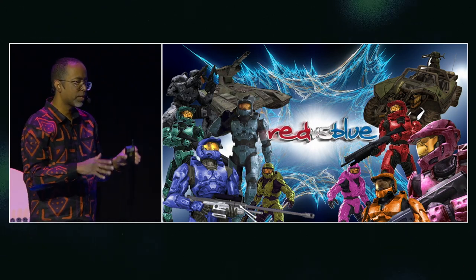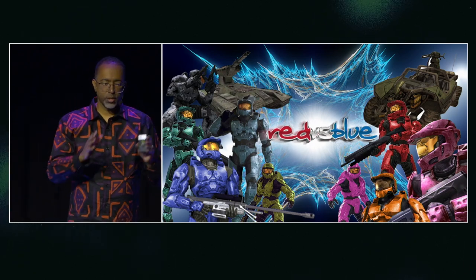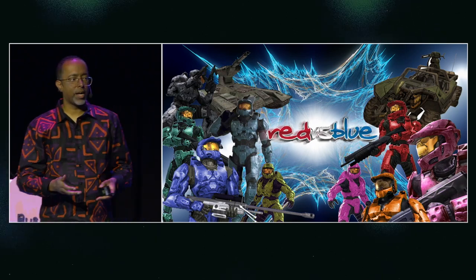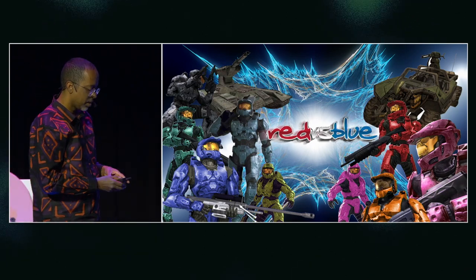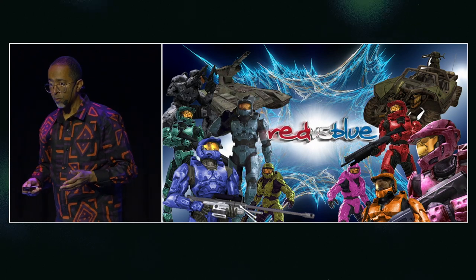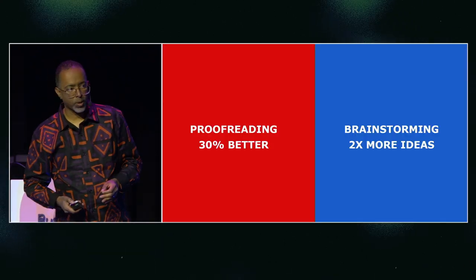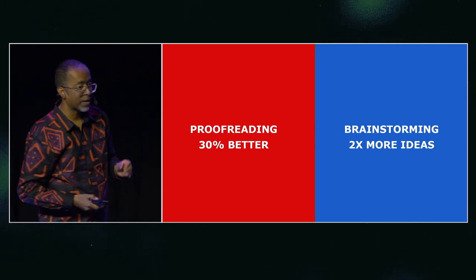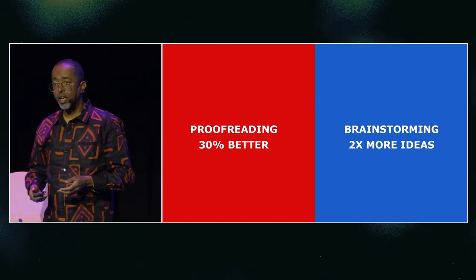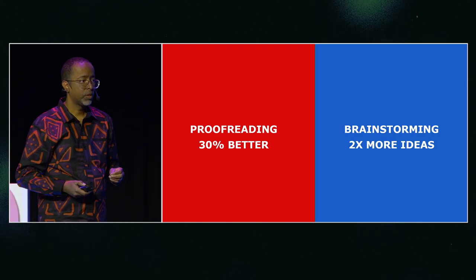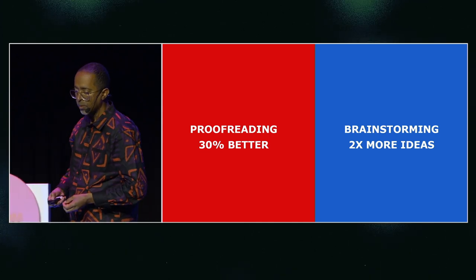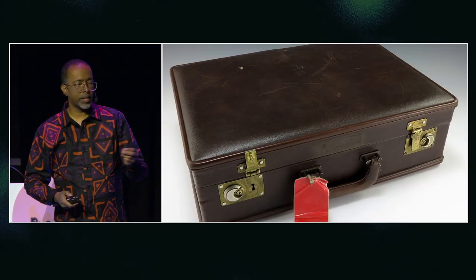This can even come down to color. In an experiment, people doing detail-oriented tasks like proofreading versus creative tasks like brainstorming were given either a blue or red background. The folks with a red background for proofreading found 30% more errors. The folks with a blue background for brainstorming came up with twice as many ideas. So if you're designing a system for people to think creatively, what color choices do you want to think about?